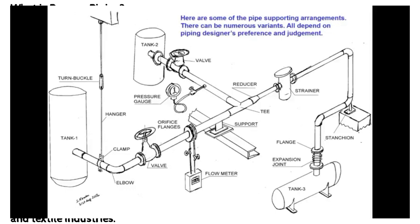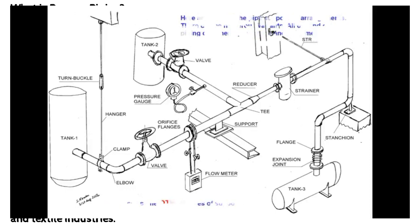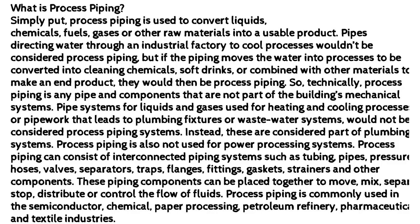Process piping is commonly used in the semiconductor, chemical, paper, processing, petroleum refinery, pharmaceutical and textile industries.